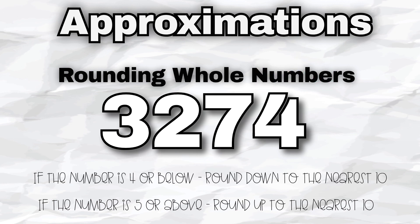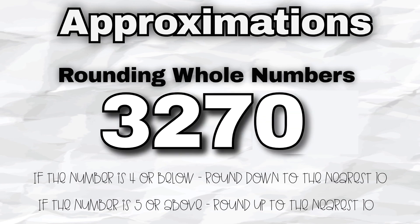Step three: lastly, any digits that come after the last digit should be replaced with zero. That's the basic idea behind rounding whole numbers. It helps simplify calculations and gives you a quick estimate. Feel free to ask any questions if you need further clarification. Let's dive into some practice examples to solidify our understanding.